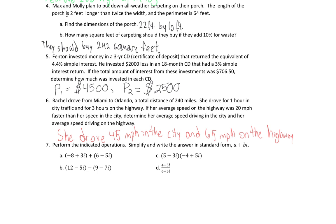Going to number 7, we're going to perform the indicated operations and write in standard form, which is A plus Bi, where A is the real part and B is the coefficient of i. For part a, it's just addition, so we add across: negative 8 plus 6 is negative 2, and 3 plus negative 5 is also negative 2. So the answer is negative 2 minus 2i.